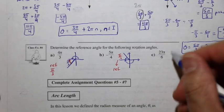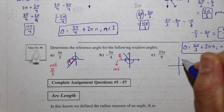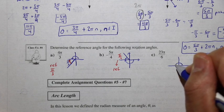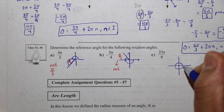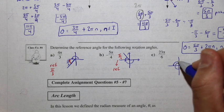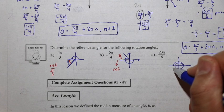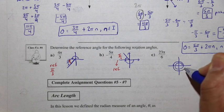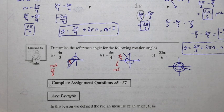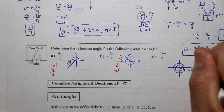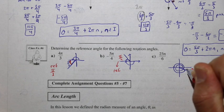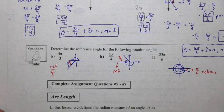For part c, counting by sixths: 6π/6 is one π, 12π/6 is another, 18π/6 brings us to another 180 degrees, and then we're almost to 24π/6. But we stop short by π/6. This π/6 is our reference angle because it is the smallest angle that the terminal arm makes with the x-axis.